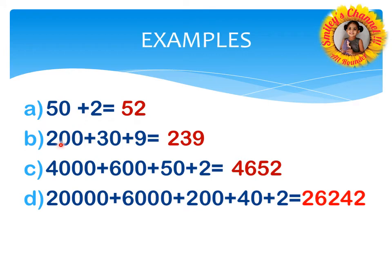Next, we are discussing with a 3-digit number: 200 plus 30 plus 9. The leftmost initial digit gives us 2, 3, 9 — so the answer is 239. Similarly, if you have 539, it is 5, 3, 9. For 642: 600 — the leftmost initial digit is 6 — then 4 and 2, giving 642. That is how 3-digit numbers work.